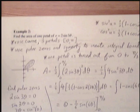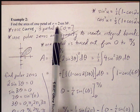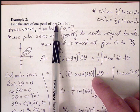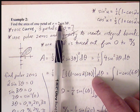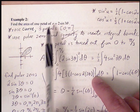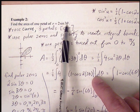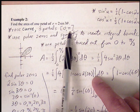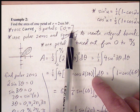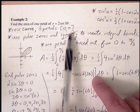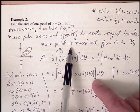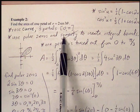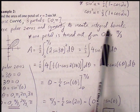Example 2: find the area of one petal of r = 2sin(3θ). This is a rose curve with three petals because 3 is odd, with a petal length of 2. The curve traces out once from 0 to π. We can use the polar zeros and symmetry to establish the integral bounds, since when the curve returns to the pole it completes one petal.